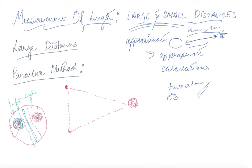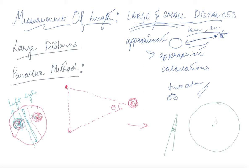When observing from two different locations, a triangle can be formed whose angle is theta. Now let me explain a property of triangles. Suppose you have a huge circle with a very large radius and a very small angle theta. The length L here is your arc length.